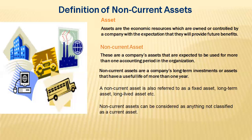Any asset bought by an organization to be used for more than one accounting period, and that is capable of generating future benefits, can be classified as a non-current asset. Non-current assets are referred to as long-lived assets or fixed assets — we used to call them fixed assets before IFRS — or long-term assets. They are like investments to the organization.